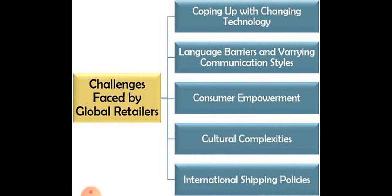The second challenge is language barriers and varying communication styles. English is considered a common language, but many countries do not prefer English — they prefer their own language. For example, China and Japan want everything in their own language in a very convenient way. Communication styles also become difficult — for example, when a product is moving from India, even understanding what product or service you are going to deliver to the customer becomes a problem. Language is the biggest barrier.